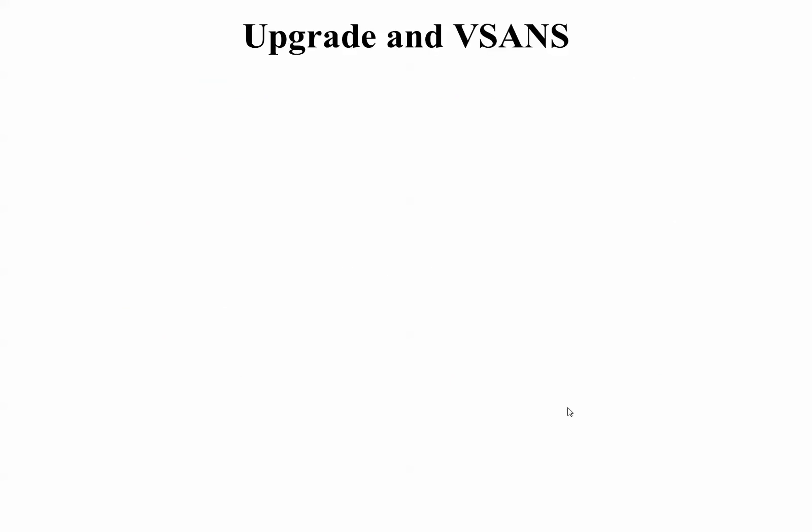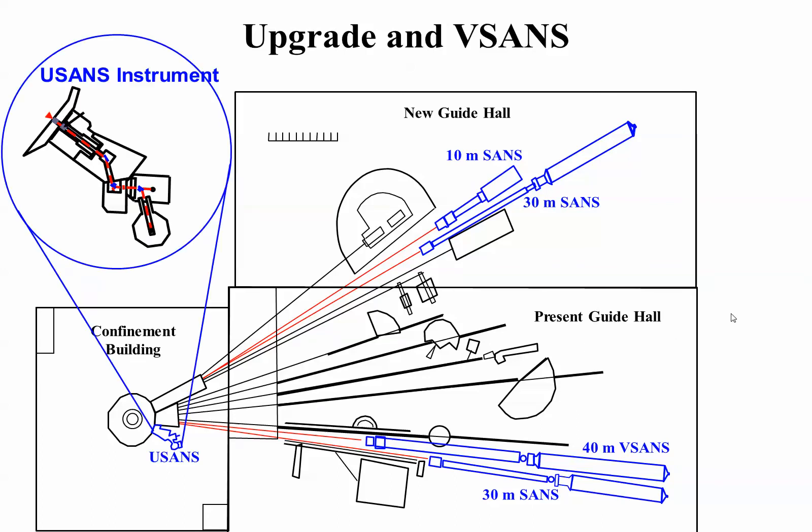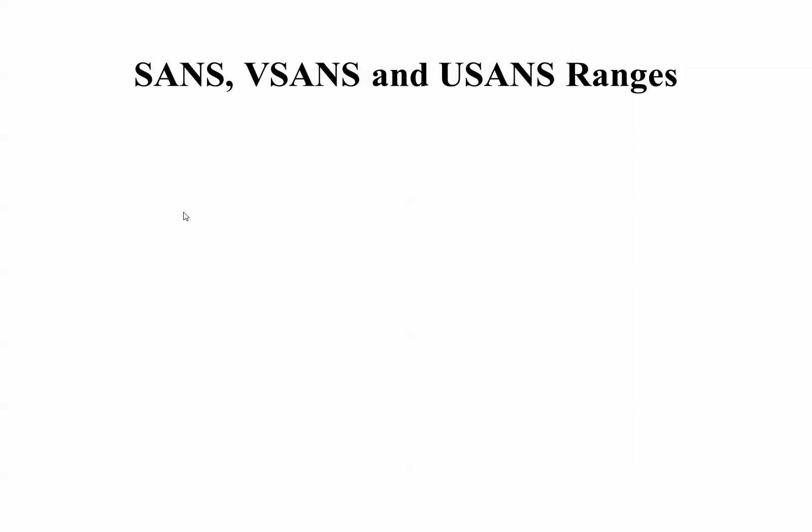Final points. Upgrade and V-SANS, old guide hall, the new guide hall, the old 10-meter SANS, it's a workhorse, the 30-meter SANS, NG7 and NG3, which becoming NGB, and the V-SANS, which will be on NG3. The U-SANS is inside the confinement building using thermal instruments.